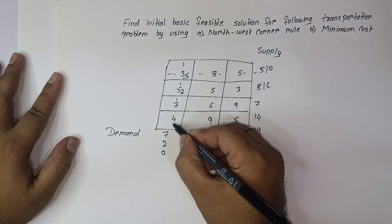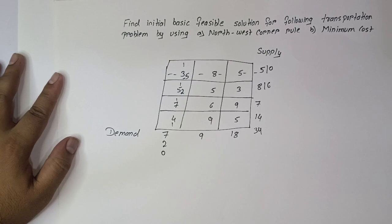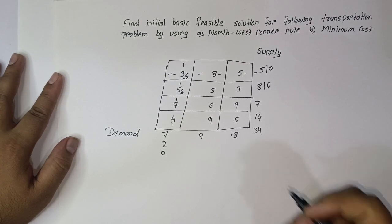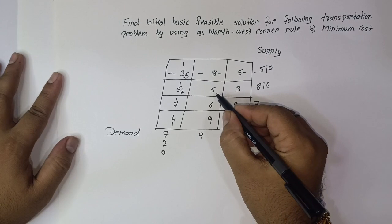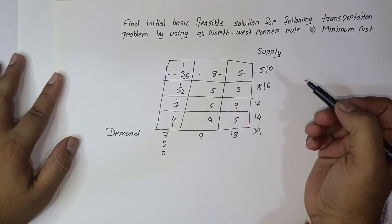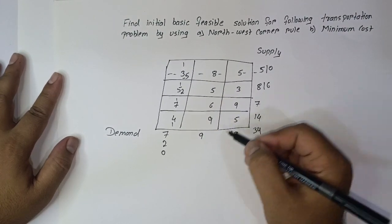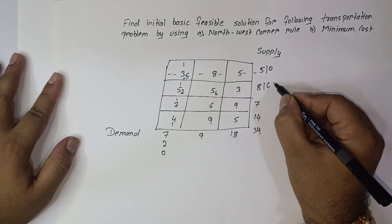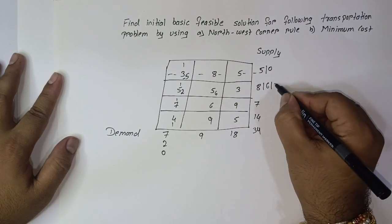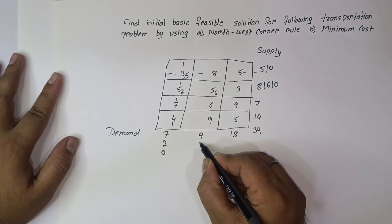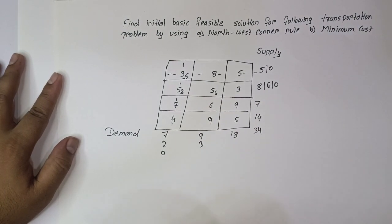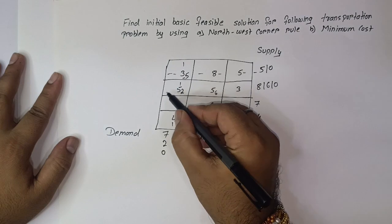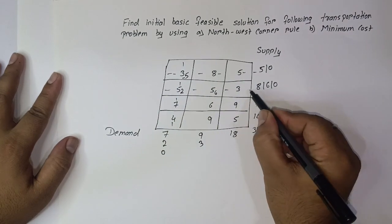Now our new northwest corner — the upper-left available cell — has value 5. We allocate the minimum of supply (6) and demand (9), which is 6. Supply becomes 0 and demand becomes 3. This row is exhausted and gets cancelled.